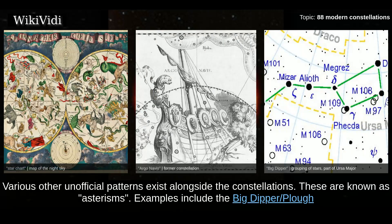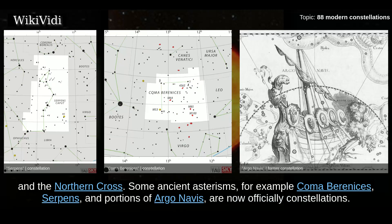Various other unofficial patterns exist alongside the constellations. These are known as asterisms. Examples include the Big Dipper, also known as the Plough, and the Northern Cross. Some ancient asterisms — for example, Coma Berenices, Serpens, and portions of Argo Navis — are now officially constellations.